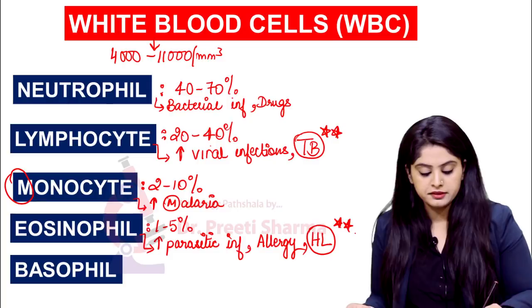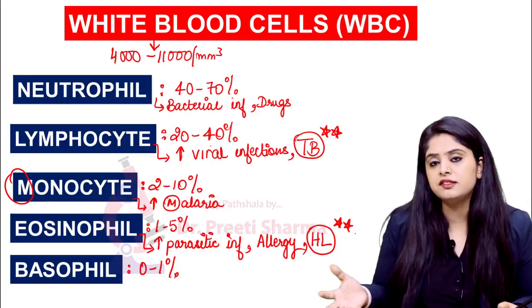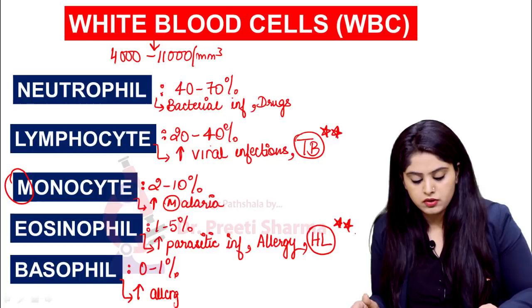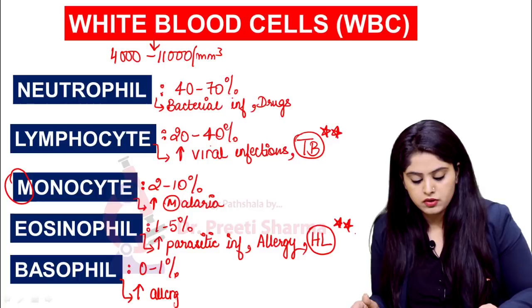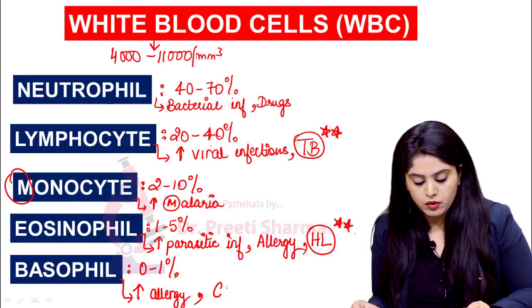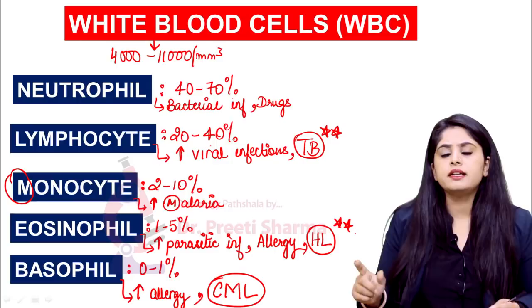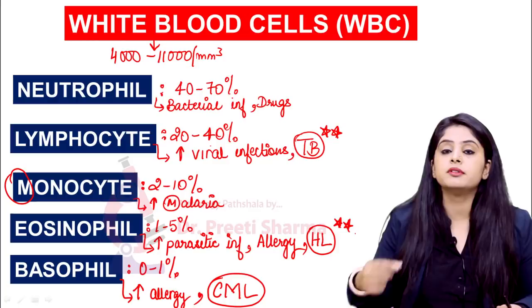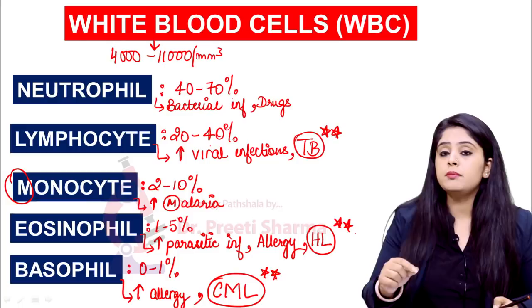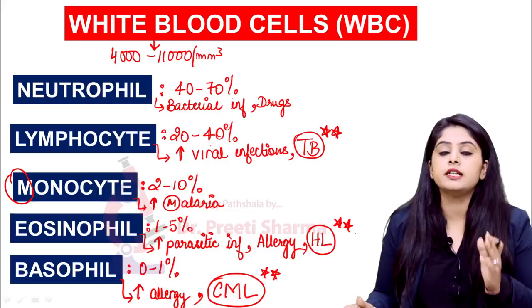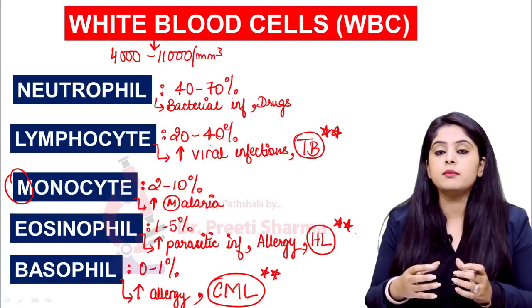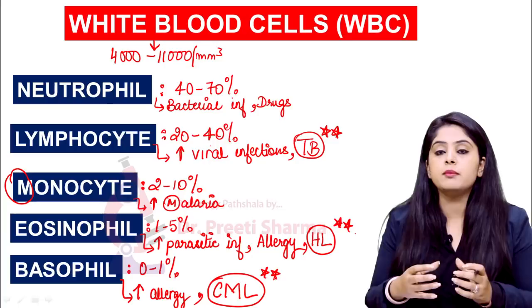Lastly, we have basophils — only 0 to 1 percent. Very rarely do you actually see a basophil in a peripheral smear. Basophils will be increased in allergy, and very importantly in the tumorous condition CML — chronic myeloid leukemia. As soon as you hear about basophil increase, the first keyword that should come to mind in the exam is CML. This is a key point we will repeat when we go to CML: CML shows an increase in basophils.